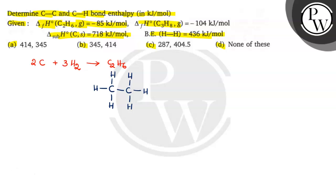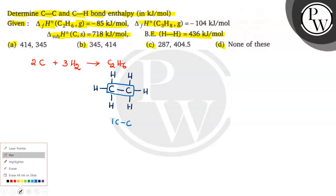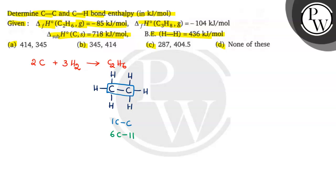Now let us see how many CC bonds are there. This is called a CC bond — we have 1 CC bond. Next, how many CH bonds are there? Count it: 1, 2, 3, 4, 5, 6. There are 6 CH bonds present in ethane.